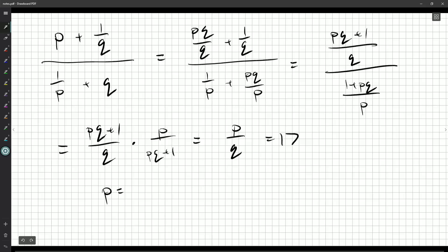So p is 17 times q, and these are positive integers, so we know p is at least going to be 17. Well, what else do we know? We want p plus q to be less than or equal to 100, but I know what p is. So we get 17q plus q has to be less than or equal to 100. 18q has to be less than or equal to 100.